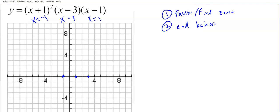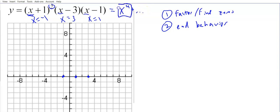For end behavior there are really four cases. You want to multiply this out — if you FOIL it all out, think about what the first term would be. For example, x times x would give x squared. If you FOIL (x+1)(x+1), that's x squared, and x squared times x times x is x to the fourth. The rest of the terms don't matter — the key thing is the highest degree term is x to the fourth, and that determines end behavior.